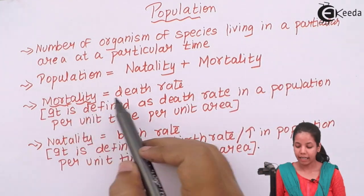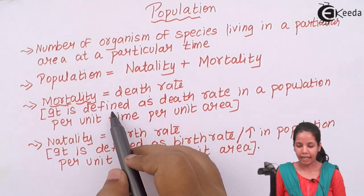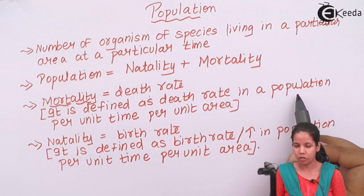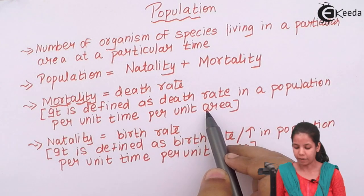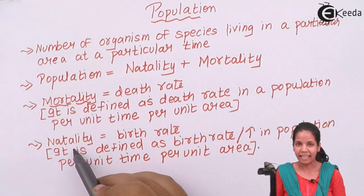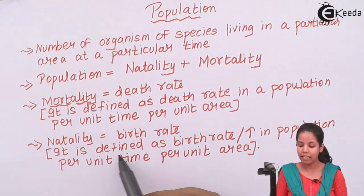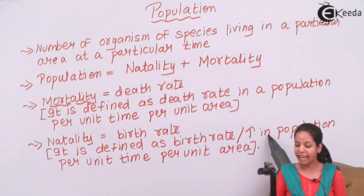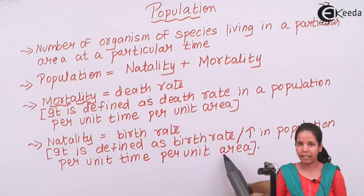Mortality is death rate — defined as the number of people who have died in a population per unit time per unit area. Natality means birth rate or an increase in the number of individuals — defined as the increase in population per unit time per unit area.